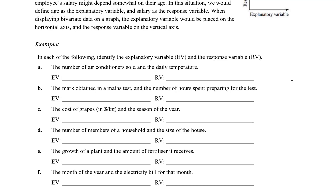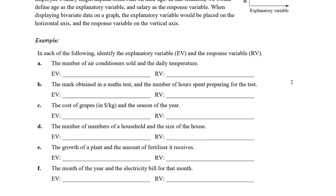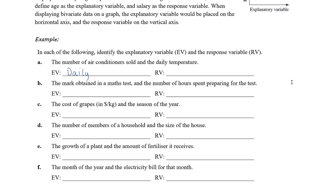In this instance, we might think we're more likely to sell more air conditioners when it's hot, so the number of air conditioners sold is responding to the temperature. The temperature is the explanatory variable — it's the daily temperature that explains the air conditioner sales. So daily temperature is the explanatory variable and number of air conditioners sold is the response. If it's hot, more air conditioners are sold; if it's cold, less.